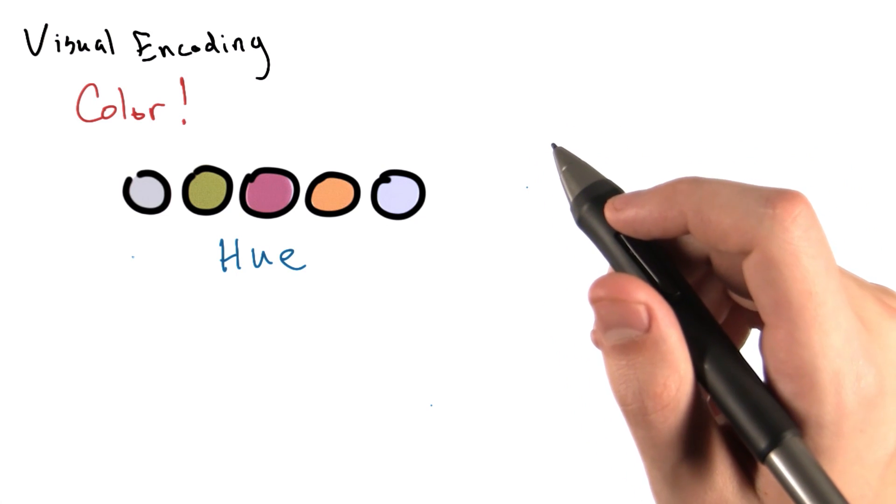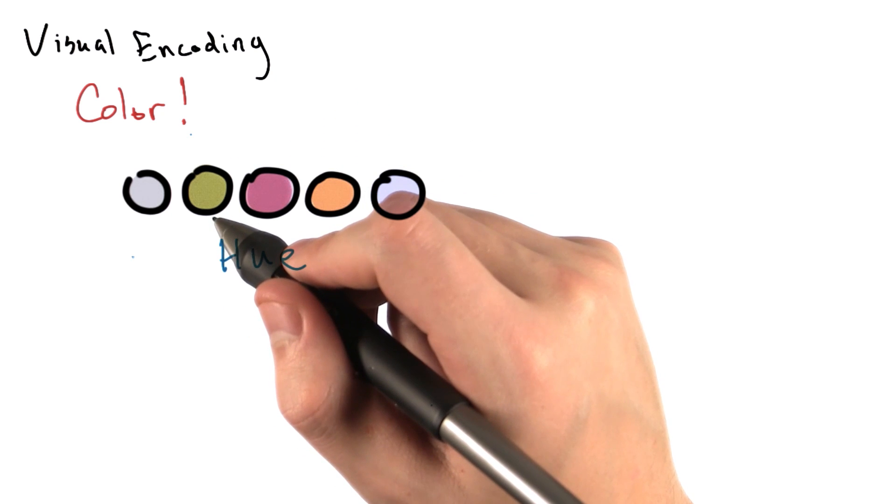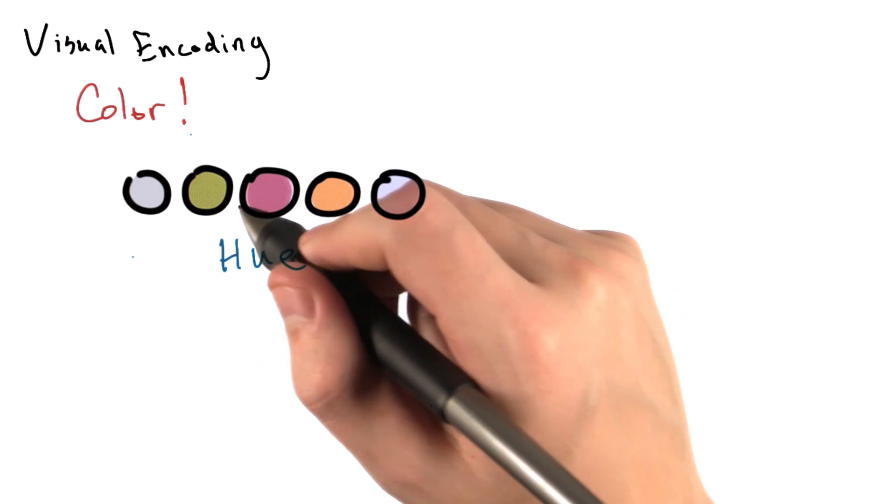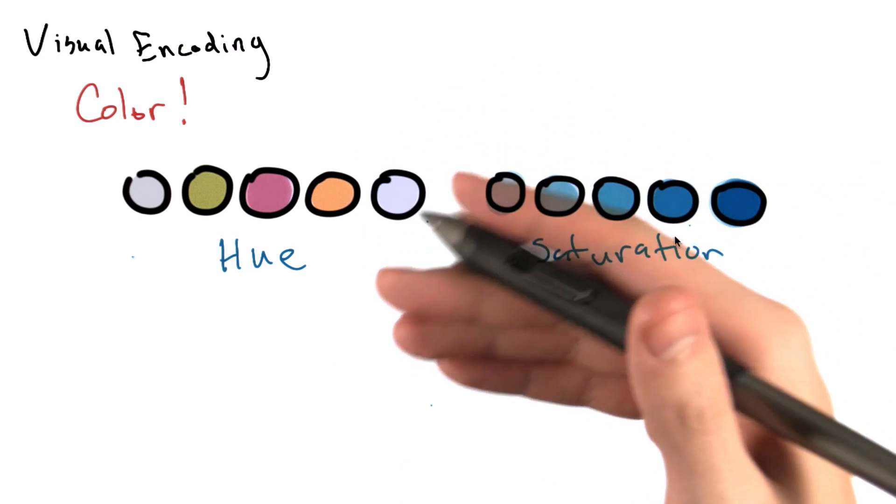We can also encode data into our visualization using color. We can typically encode values with color in two different ways: hue and saturation. They can be used individually or in combination.